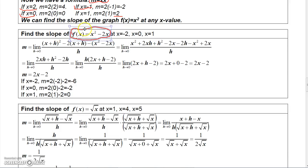First, I'm going to calculate f of x plus h. Well, f of x plus h means I take this function and replace x with x plus h. So, I'll get x plus h quantity squared, and then I'm going to have minus 2 times x plus h. So, that will give me this term.